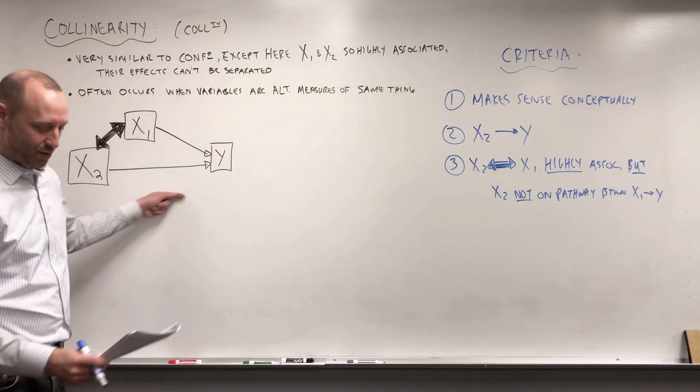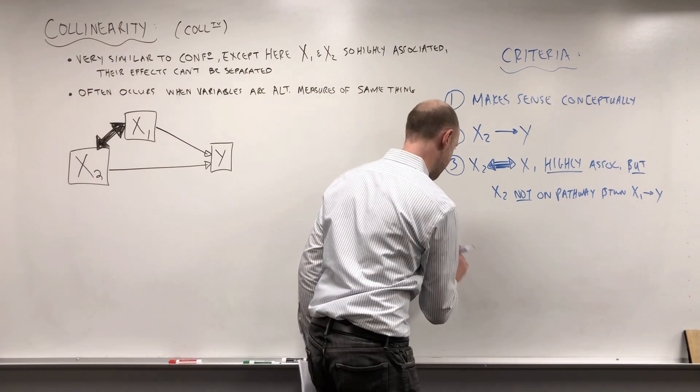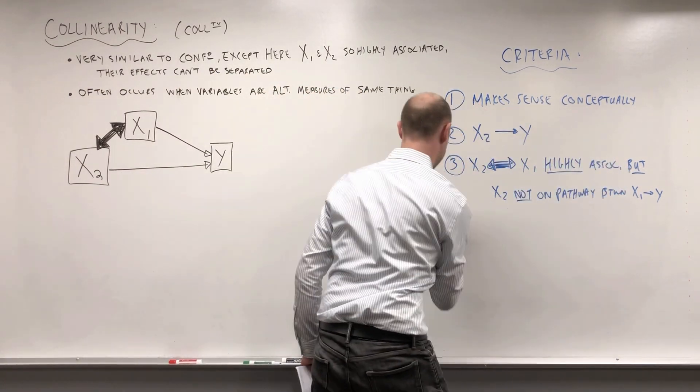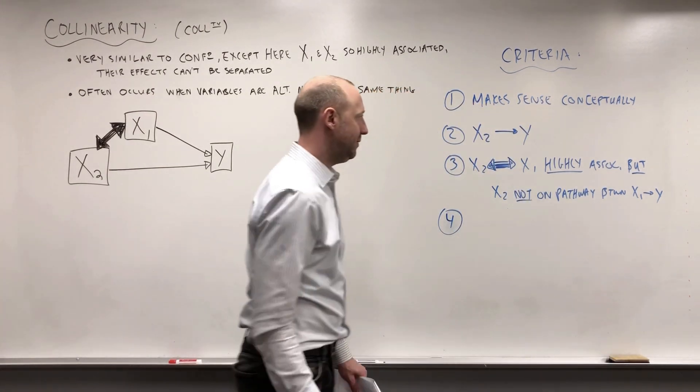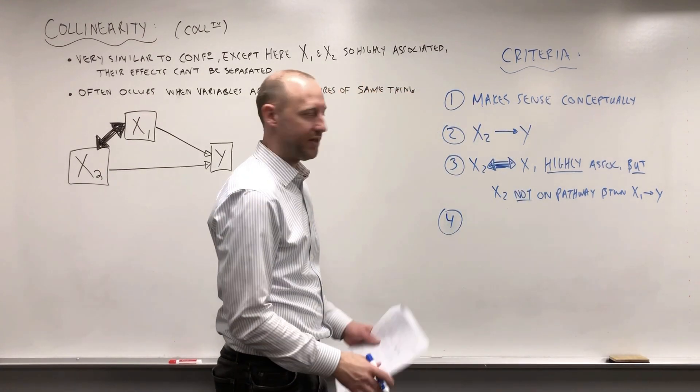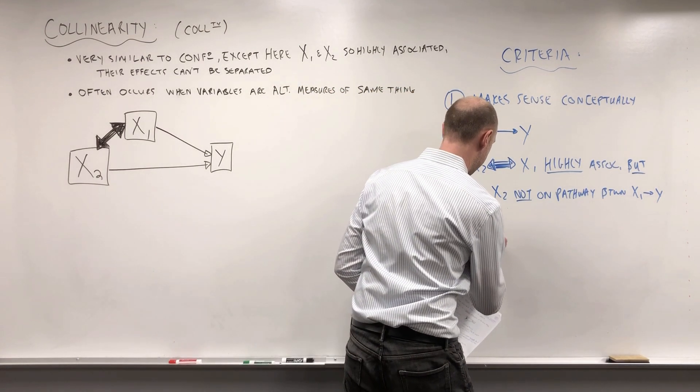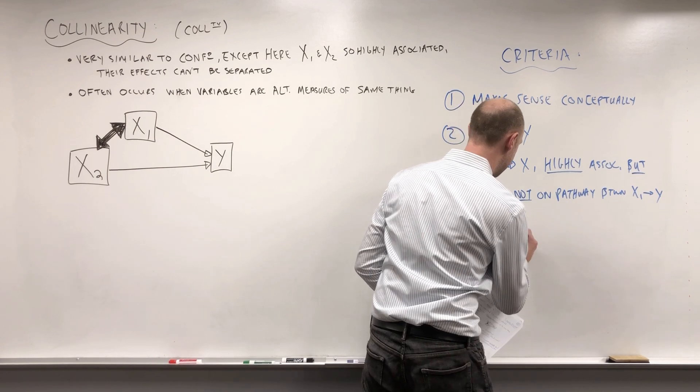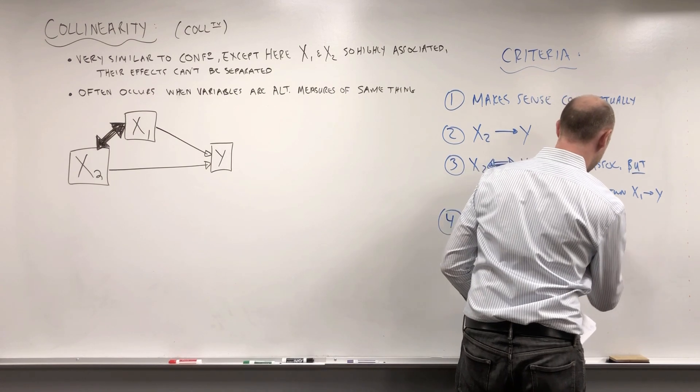But X2 is not on the pathway between X1 and Y, so it's not acting as a mediator where X1 leads to X2 which then leads to the outcome. What we're going to see happen numerically is similar but a little different than for a confounder.